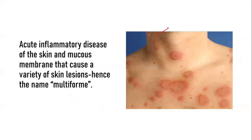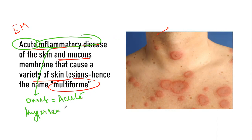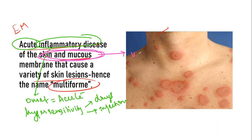Getting right into Erythema Multiforme — this is an acute inflammatory disease affecting your skin and mucous membranes that causes a variety of lesions, and hence the term 'multiforme.' It occurs because of a hypersensitivity reaction to drugs and infections. The typical targets are the skin and mucous membrane, where they cause a variety of lesions.